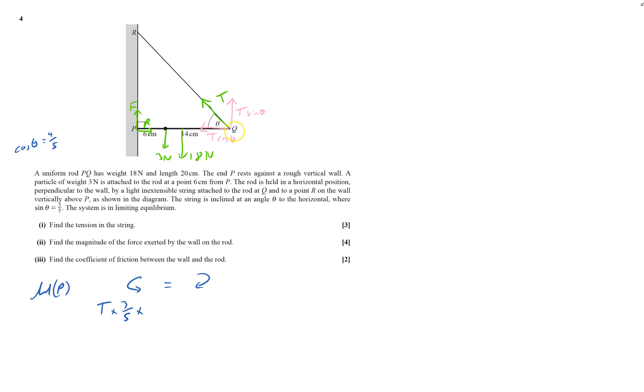Times by the distance away, that's 20 centimeters. I can work in 20 centimeters because I could have just times by 100 at the end. I've got that 3 times by 6 centimeters plus 18 times by 10. That will give me T equals 16.5 newtons.